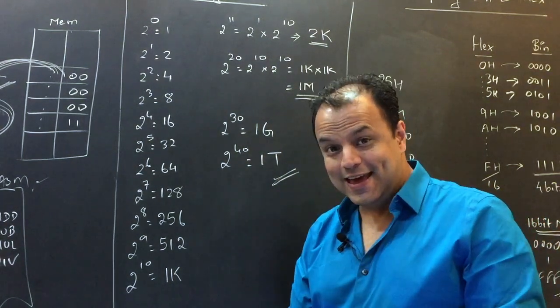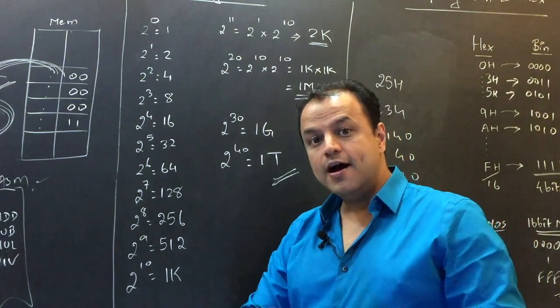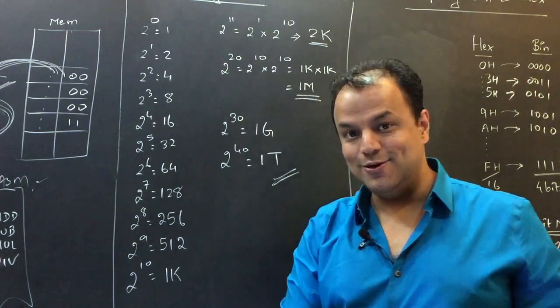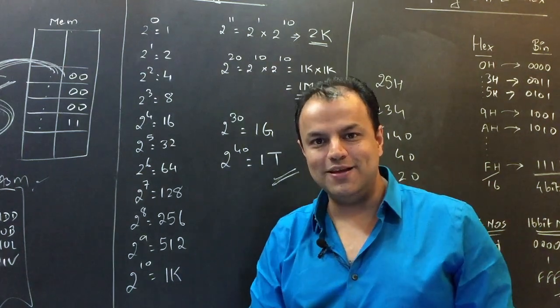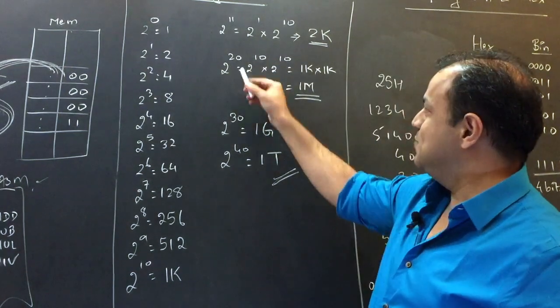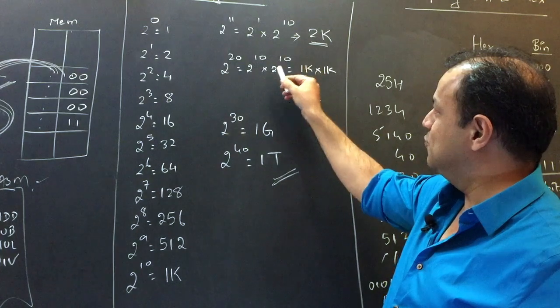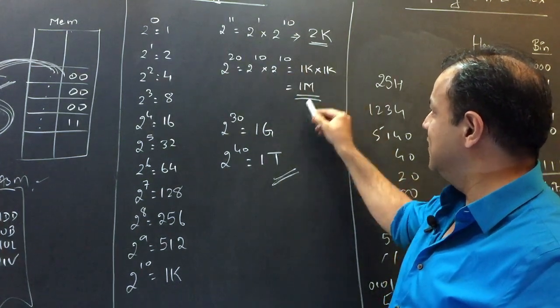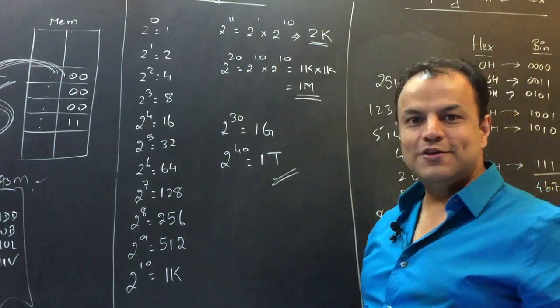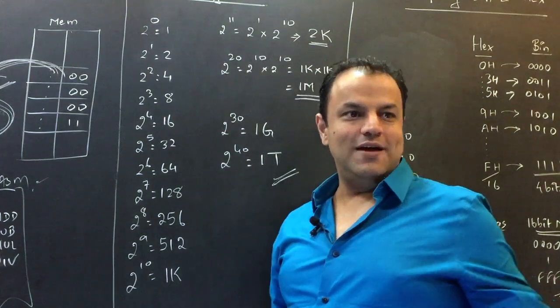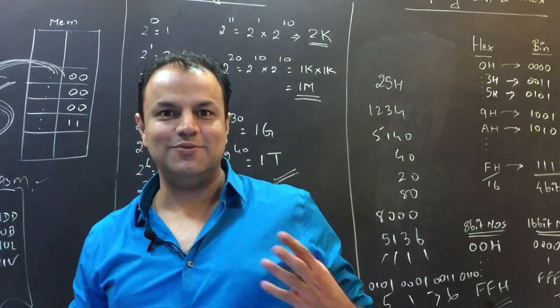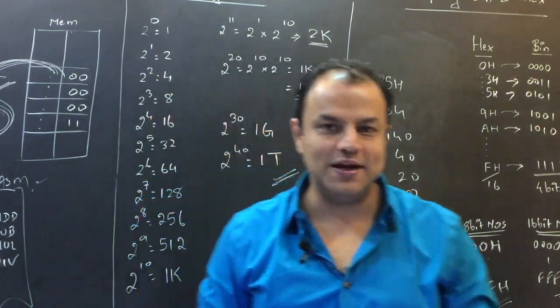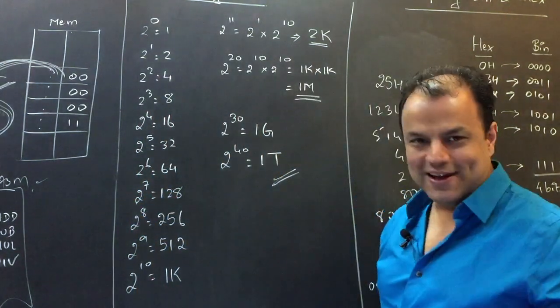Two raised to 20. One K K. A kilo into a kilo is a mega. Thousand into thousand becomes million. So two raised to 20 is two raised to 10 into two raised to 10. That is a kilo multiplied by a kilo. That is a mega. So two raised to 20 is one M. You ever hear one megapixel or one megabyte? In our subject, that simply means two raised to 20.